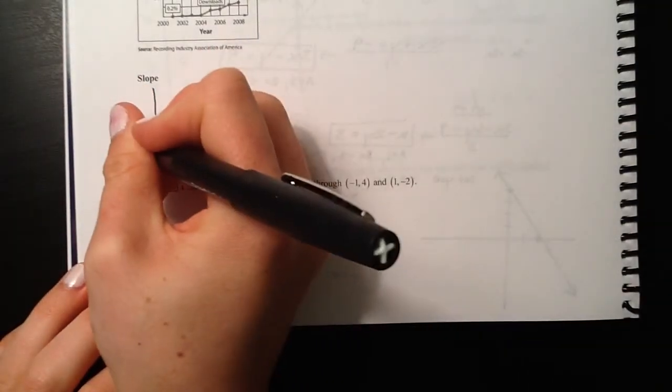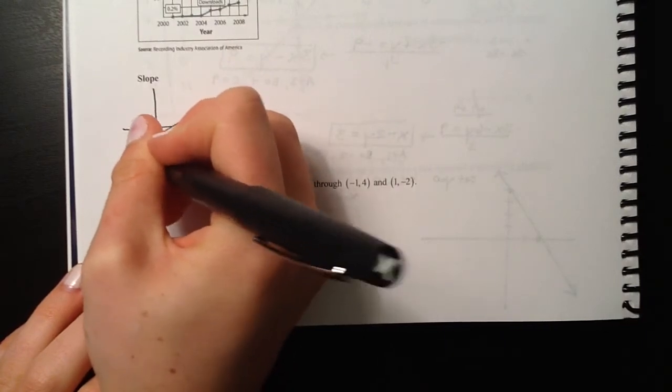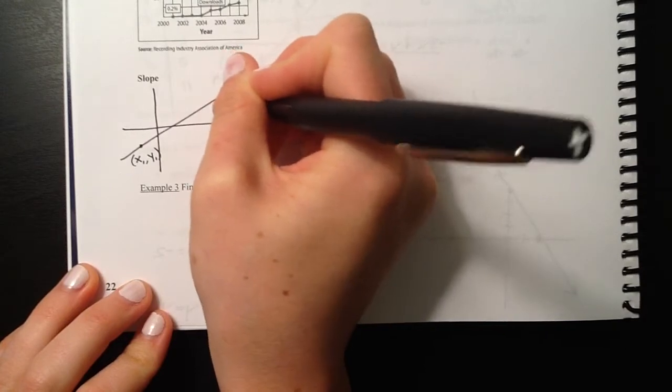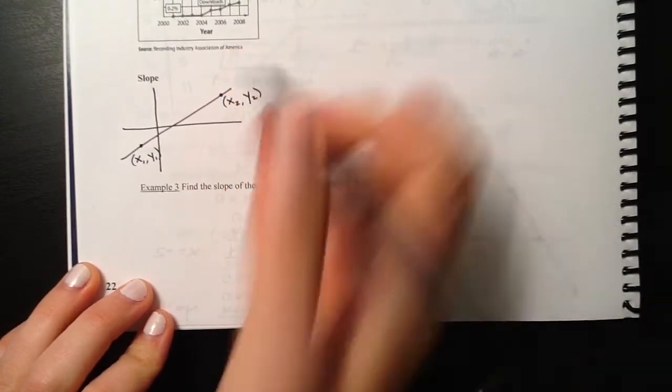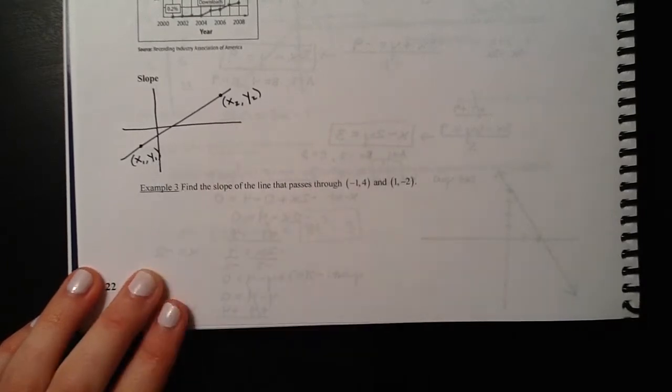Let me show you a picture here. Say we've got a line that looks something like this. If we want to find the slope of the line, we pick out two points. Let's say this point right here is the point x1, y1, and then pick another point, x2, y2. If we wanted to find the slope between those two points, we would use these actual coordinate points in a formula.